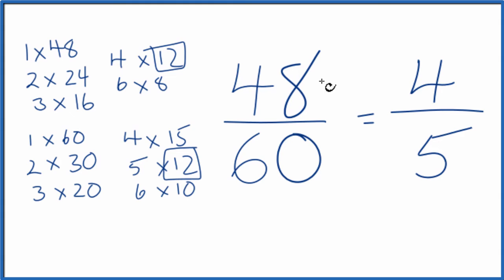So we've simplified the fraction 48 over 60 down to four over five. We can't reduce this any further. These are equivalent. If you divide four by five or 48 by 60, you're going to get the same value.